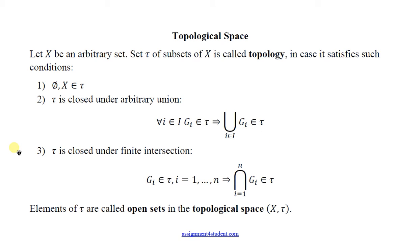And the third one: tau is closed under finite intersection, which means if we take any finite number of sets from tau, for example n sets, and make the intersection of them, then this intersection will belong to tau. Elements of tau are called open sets, and the topological space has the following notation.